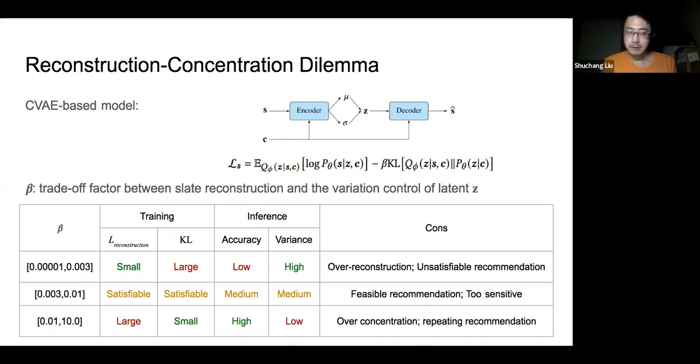The intermediate region between these two extremes can provide adequate trade-off between accuracy and variance, but it's usually sensitive and hard to find. So we want to learn a model like the model in this region, but we also want it to be easy to find.